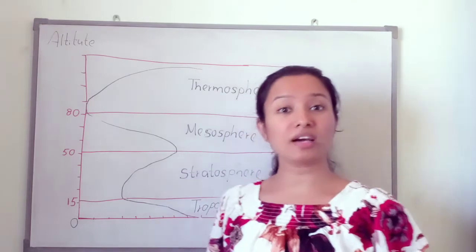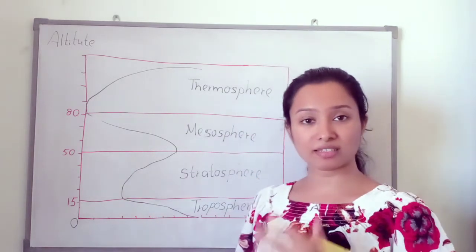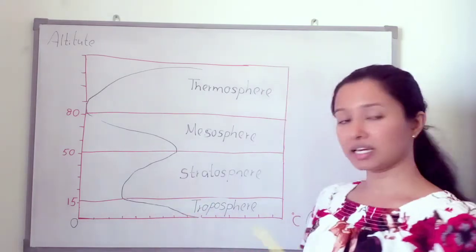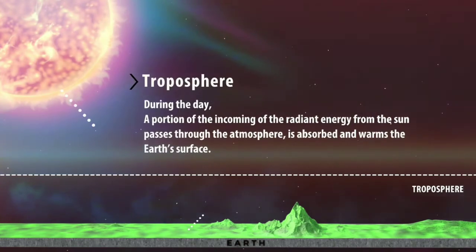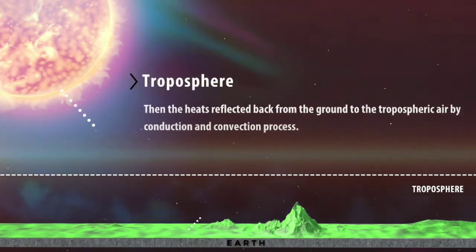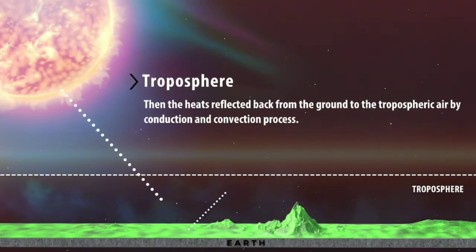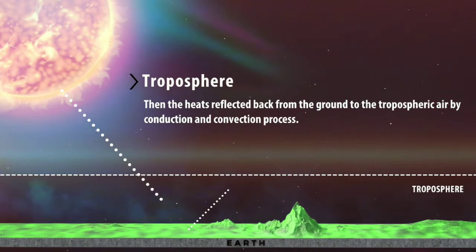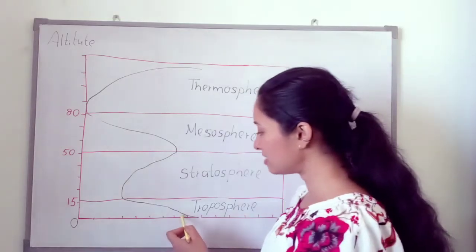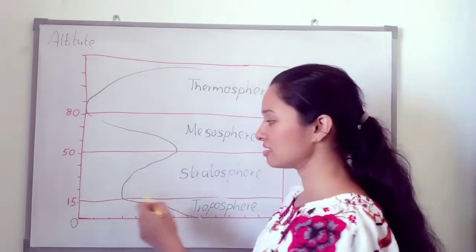Let's discuss the reasons for these temperature differences in each layer. In the troposphere, there are land and sea. Because of the sun's heat, the land and sea get heated, so near the surface the temperature is high. When altitude increases, the temperature decreases.